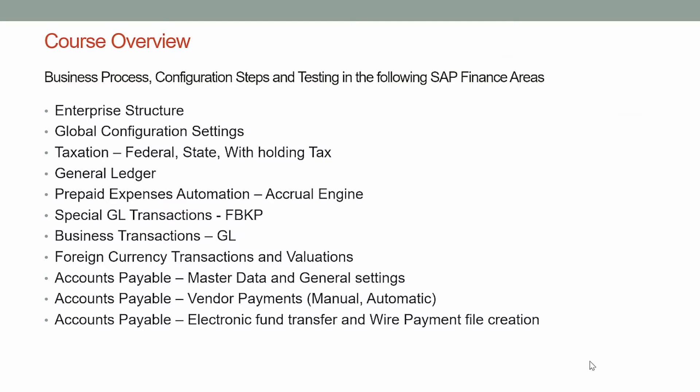Various topics that we will discuss in the course are as listed. We will initially go through enterprise structure — how the organization structure is defined in SAP and how it can be configured. Then we will look at global configuration settings, and then we will discuss taxation: how federal, state tax, and withholding tax can be configured in SAP.